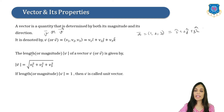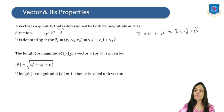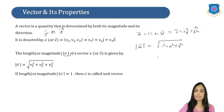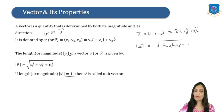Now, how to find the magnitude of vector V bar. The notation is |V bar|, also called the length or magnitude of V bar. It is given by the square root of V1² + V2² + V3². For example, the length of A bar = (1, 2, 3) is √(1² + 2² + 3²). If |V bar| = 1, then V bar is called a unit vector.